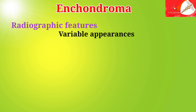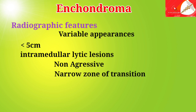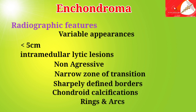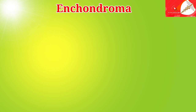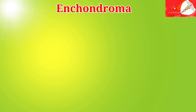Enchondromas can be diagnosed on radiological features, having variable appearances. Although typically they are smaller than five centimeters, intramedullary, lucent lesions with non-aggressive features such as a narrow zone of transition, sharply defined margins, and chondroid calcifications in the form of rings and arcs. Often they are purely lytic with no mineralization, and may present with expansion and endosteal scalloping.